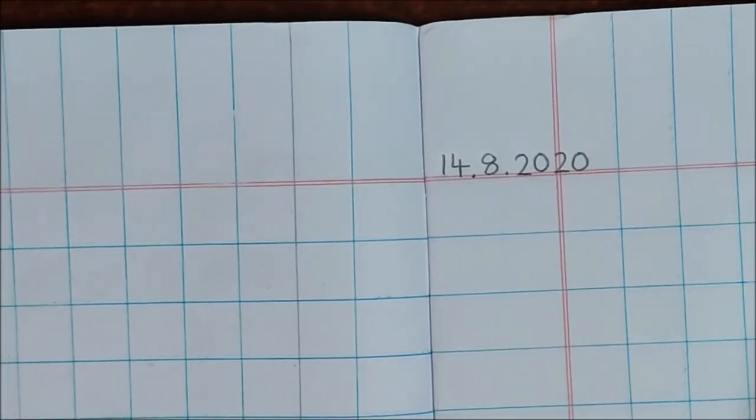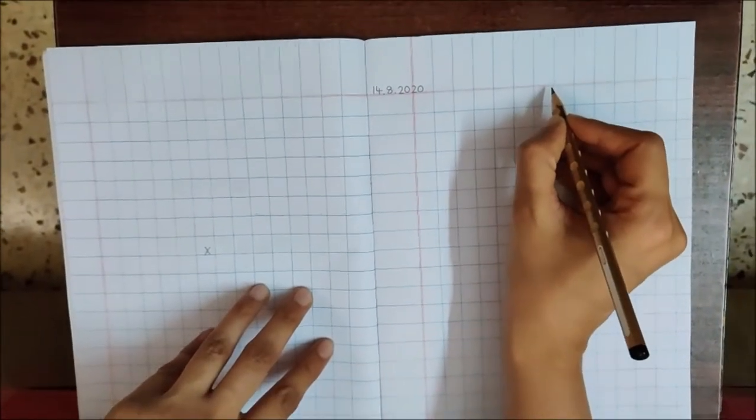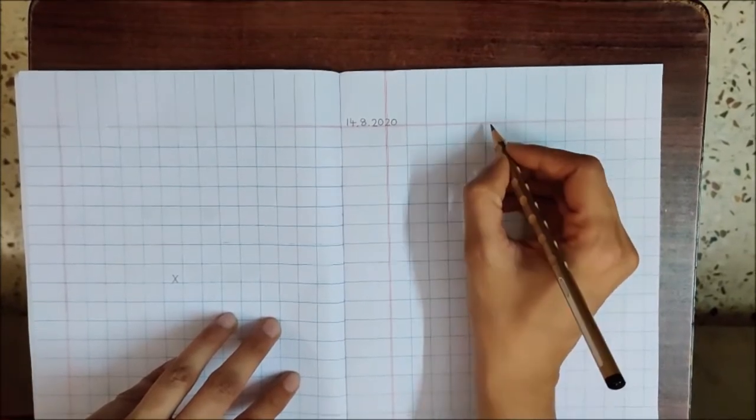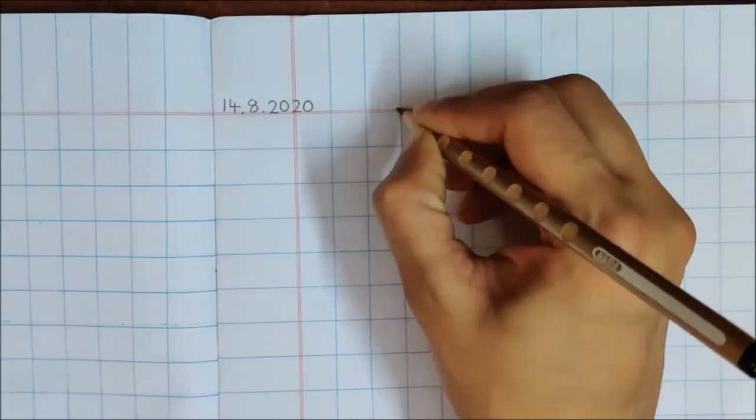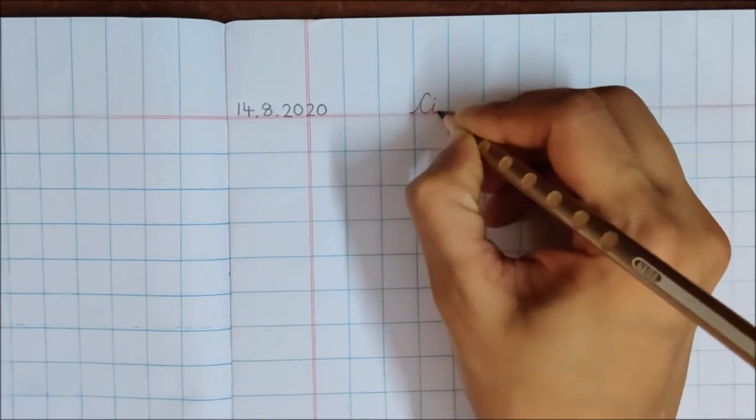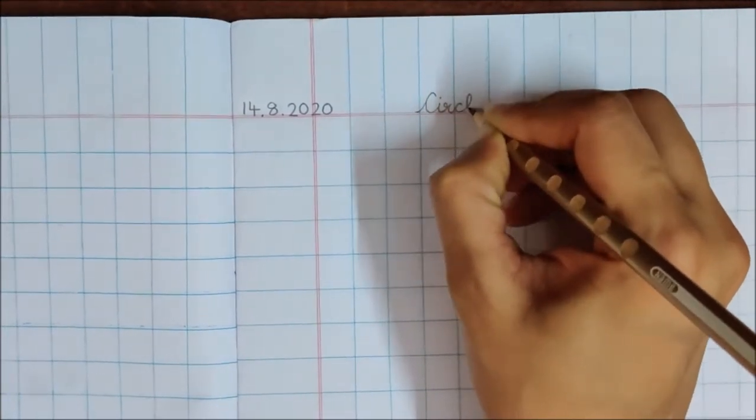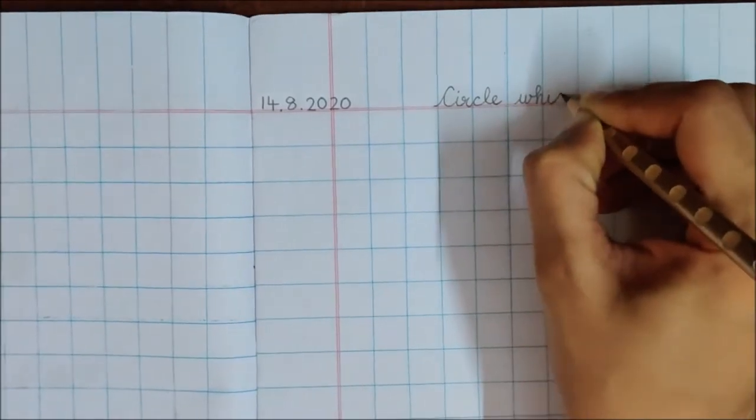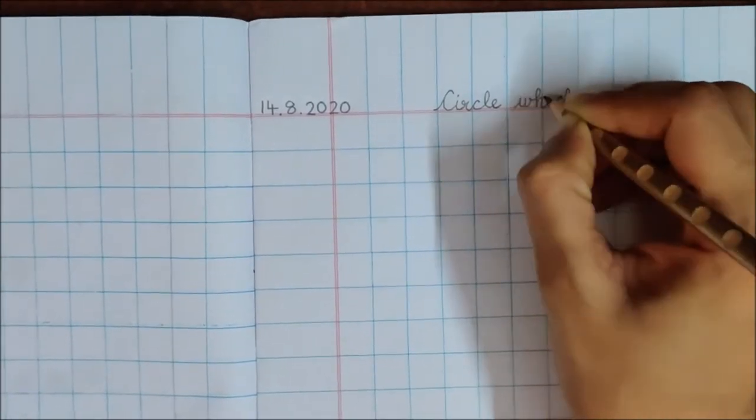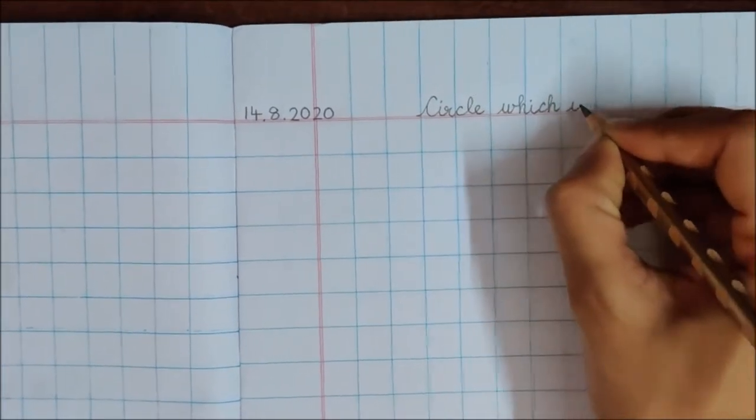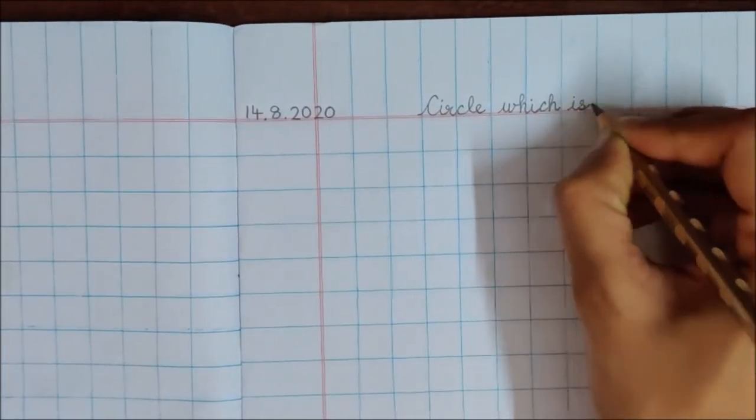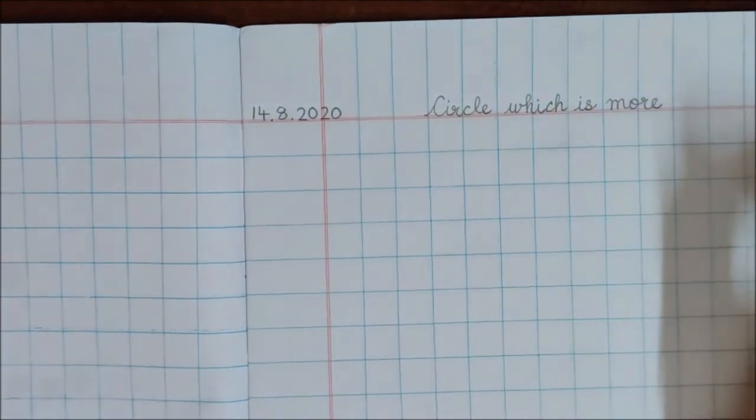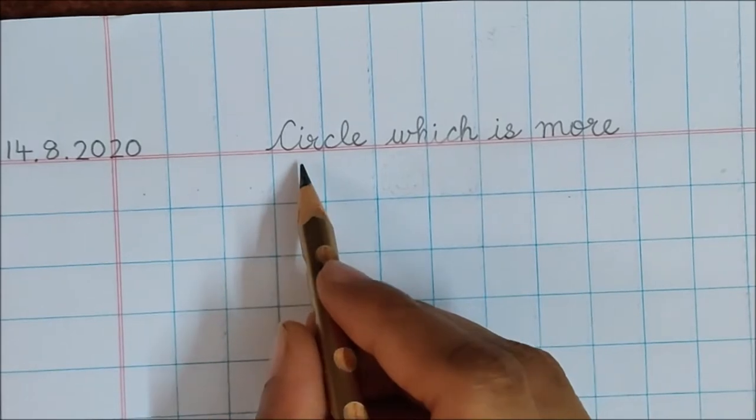Now children, on the red line, we have to write the heading. You can ask your mama or papa to write the heading for you. Now children, after writing the heading...